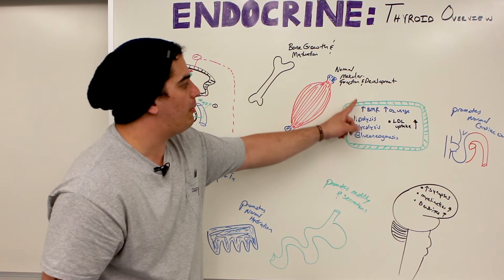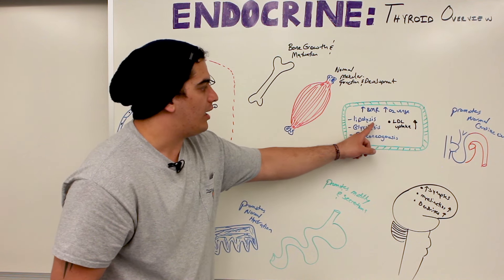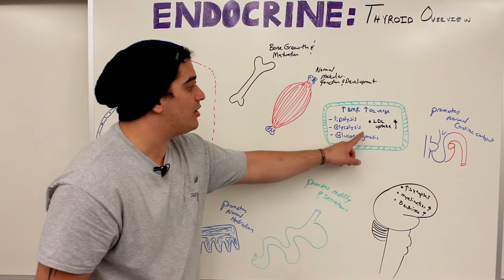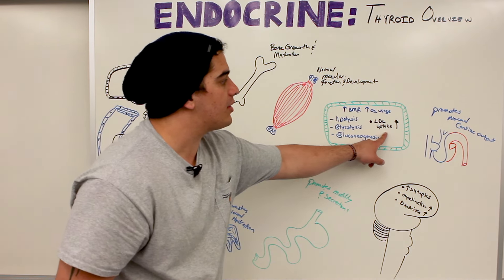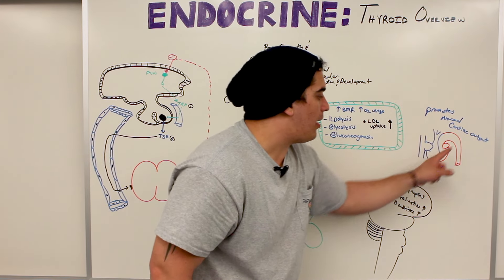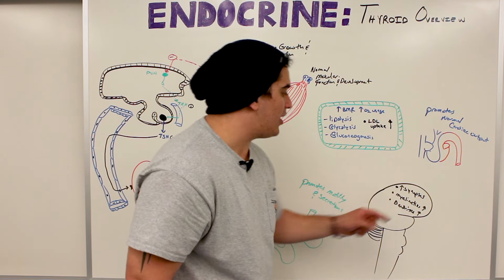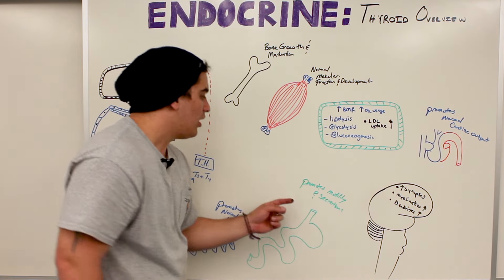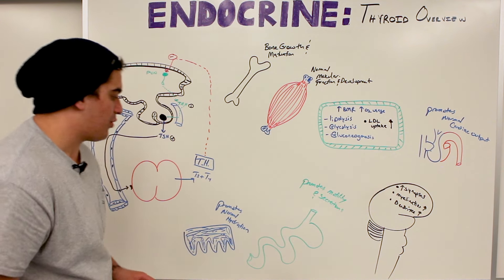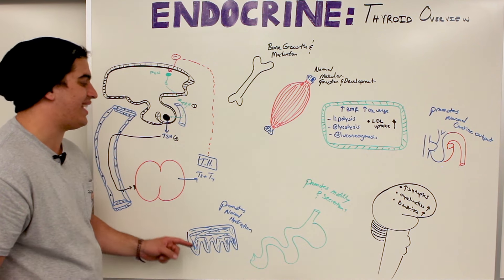It promotes normal muscular function and development, increases our basal metabolic rate and oxygen usage, and it can undergo lipolysis mechanisms, glycolysis mechanisms, gluconeogenic mechanisms, and it can increase the uptake of LDLs, low density lipoproteins. It promotes normal cardiac output and pumping functions, increases the synapses and the myelination and the dendrites within our central nervous system, and it helps to promote normal motility and secretions of the gastrointestinal tract, and promotes normal hydration of the skin tissue.